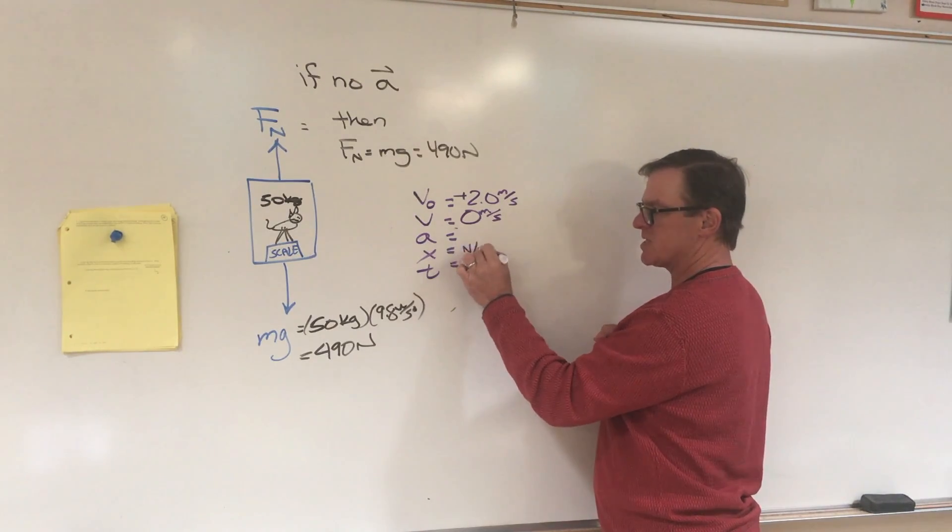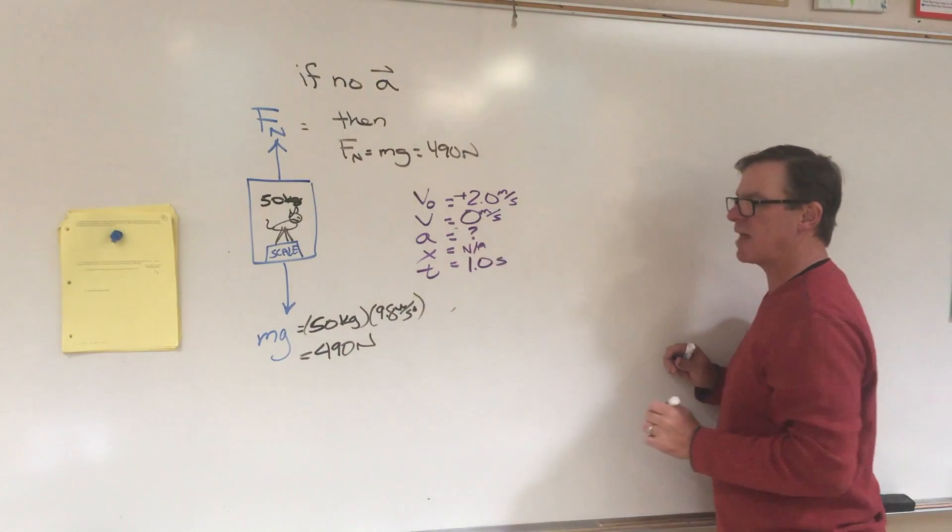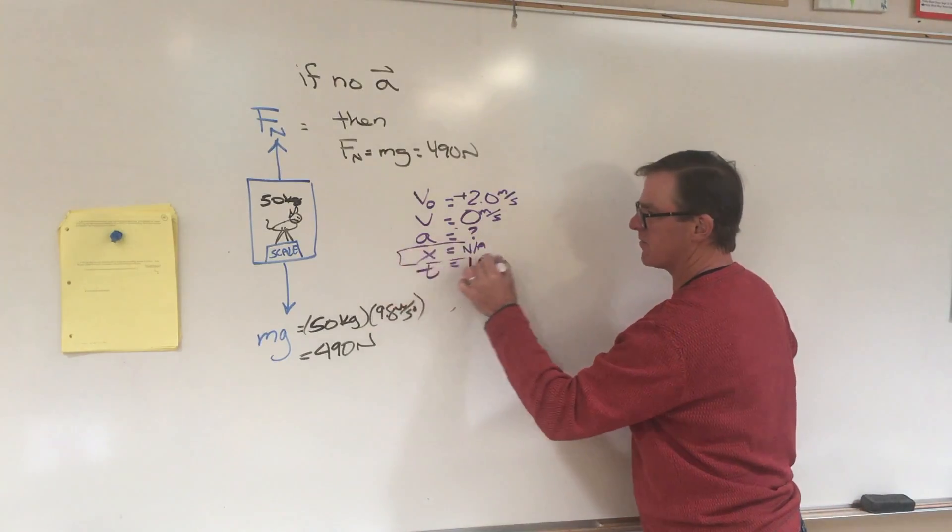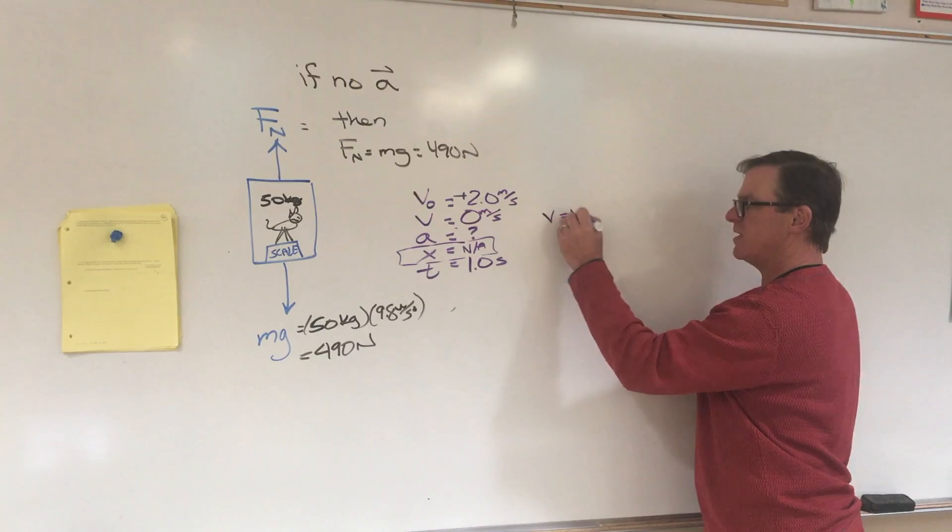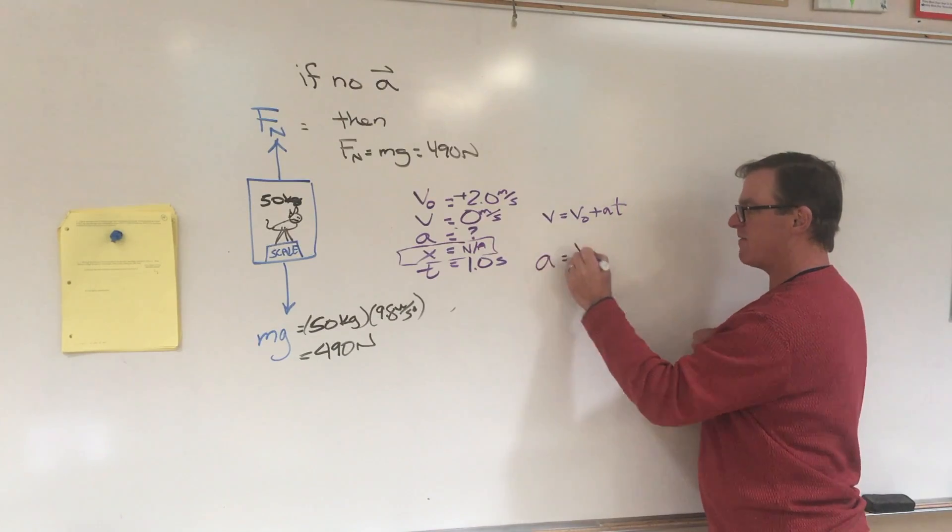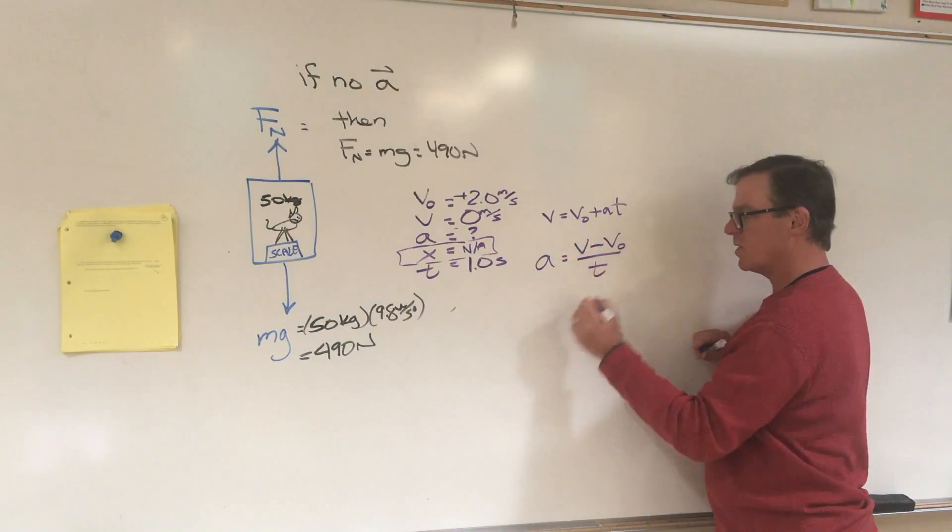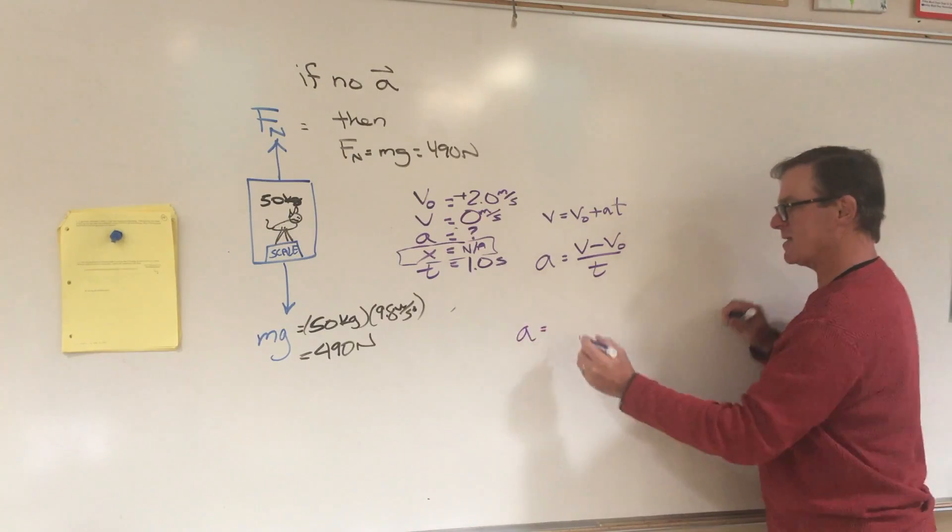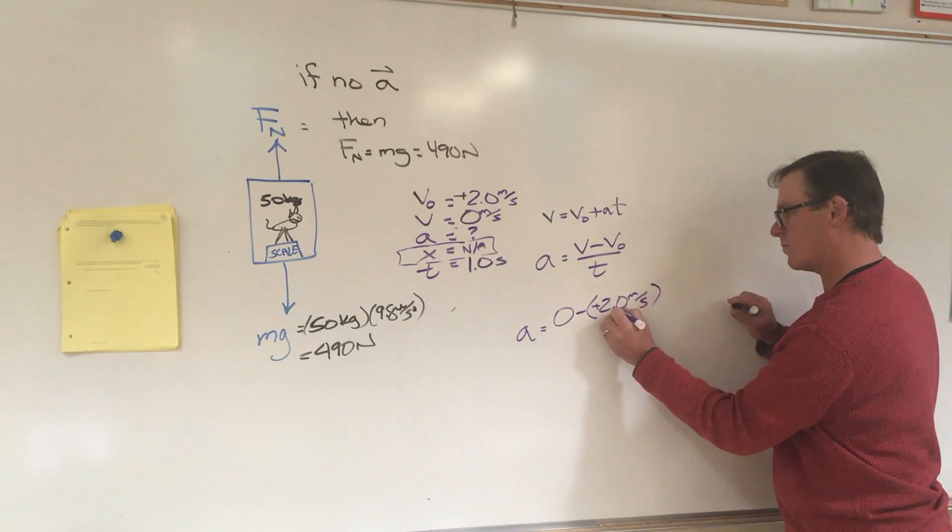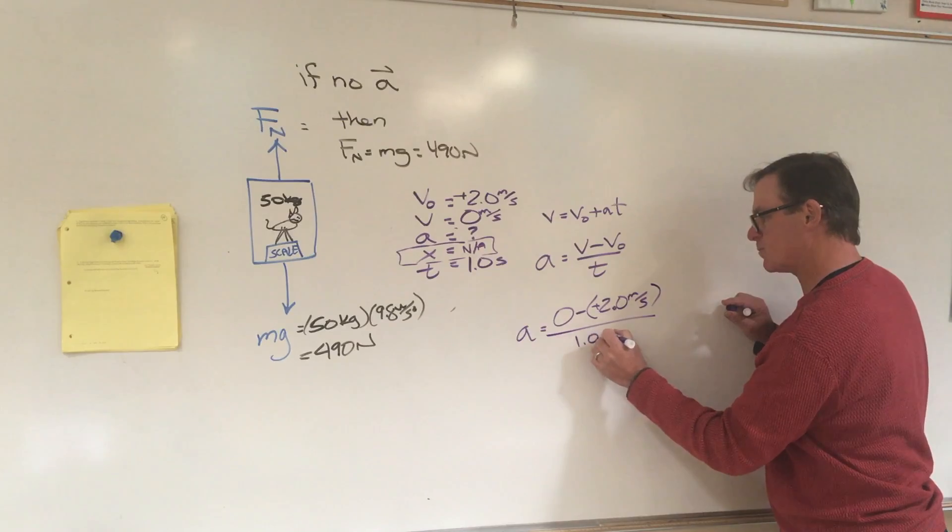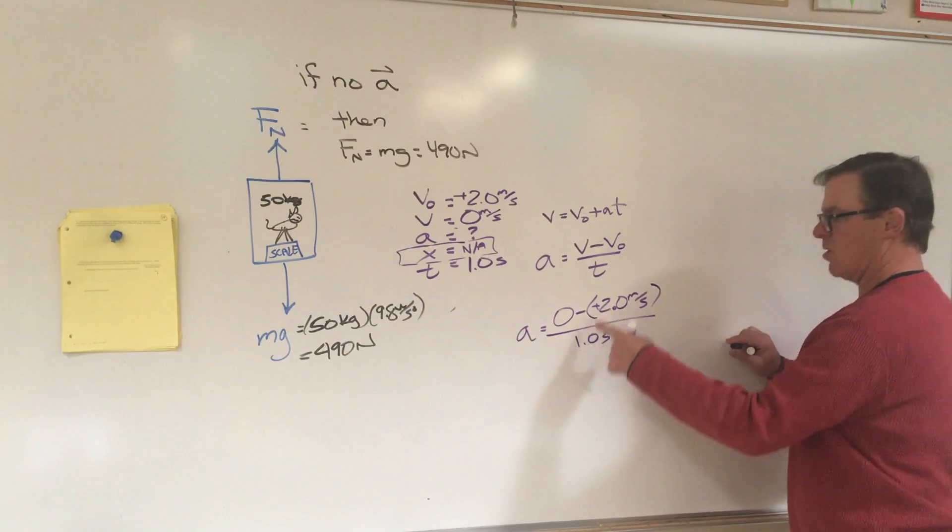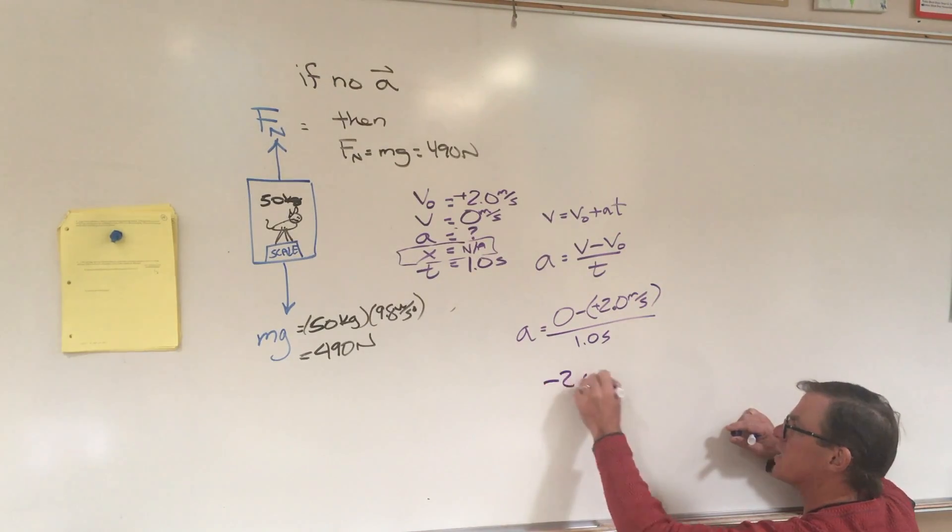Well if we don't know the distance but we want to find the acceleration, we can do that. You may recall the equation that doesn't have x in it is the first equation. So V equals V naught plus AT. Solve for A, I get final minus initial over T, and that's 0 minus positive 2 over 1 second. 0 minus 2 is minus 2 over 1 is minus 2 meters per second squared.